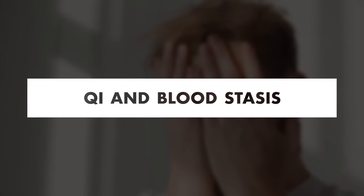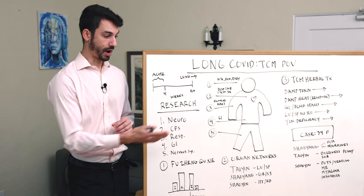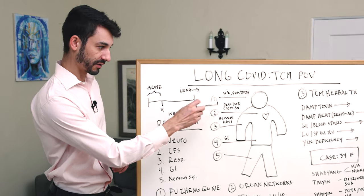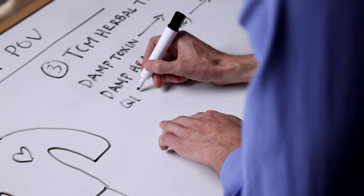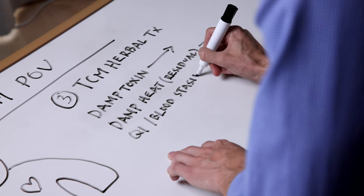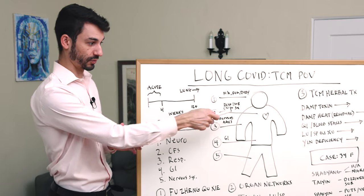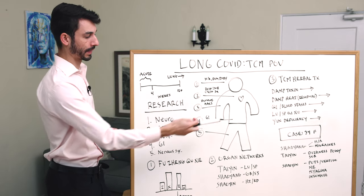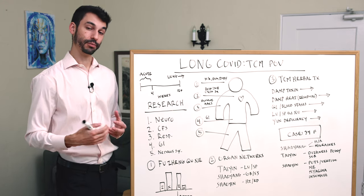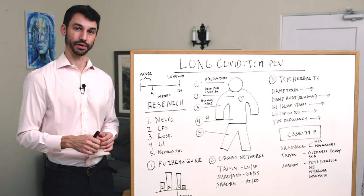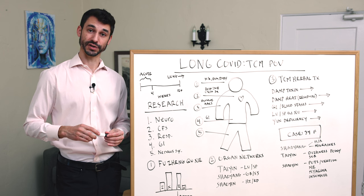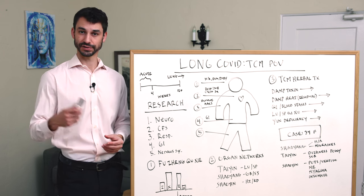When we talk about qi and blood stasis, a lot of the time this involves symptoms like fixed pain. Obviously one of the scarier symptoms we saw of COVID was these cardiovascular events like strokes and even heart attacks—these clotting events are often viewed as blood stagnation. The herbs that we use are herbs like tao ren and hong hua, and these herbs help move blood stagnation. These same herbs can be used for fibroids, ovarian cysts, fixed abdominal pain due to gynecological conditions like endometriosis.